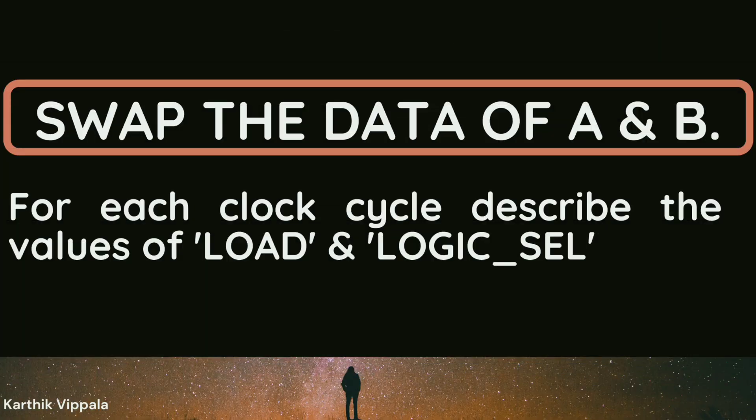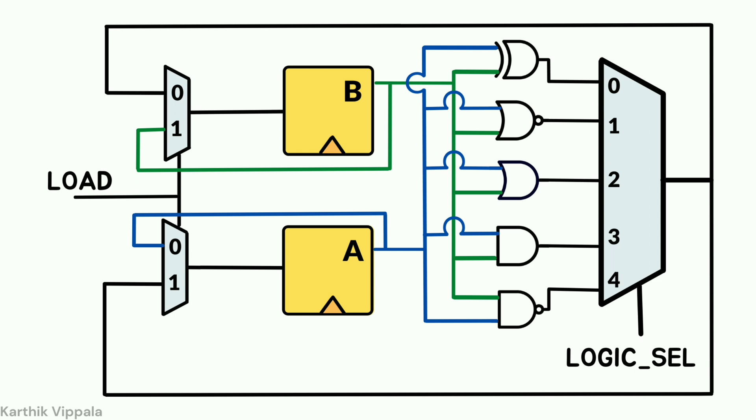The question is to swap the data of A and B registers. So we need to swap the data of A and B in the circuit. This circuit consists of multiplexers, logic gates, and registers, and everything is arranged in this manner.